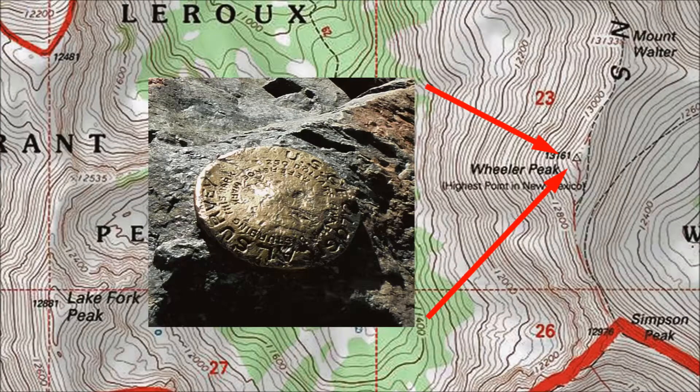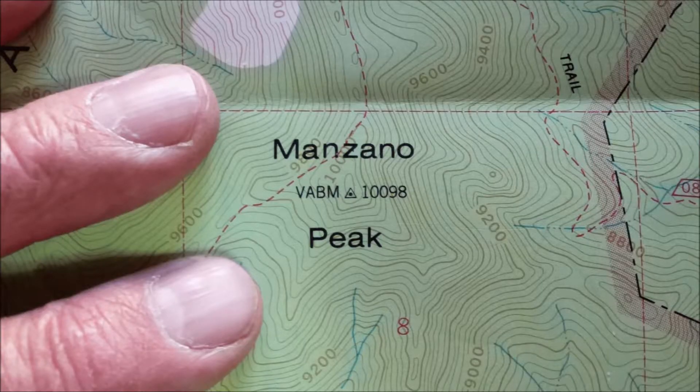On this topo map, the benchmark on Wheeler Peak is marked by a small triangle with a dot inside, not an x. Here's a map segment of Manzano Peak where you can see the same triangle with a dot inside.